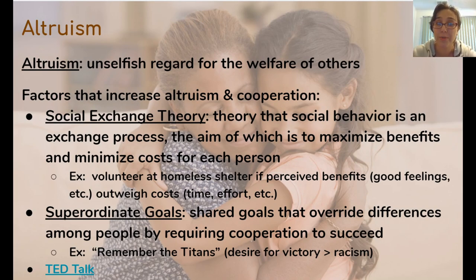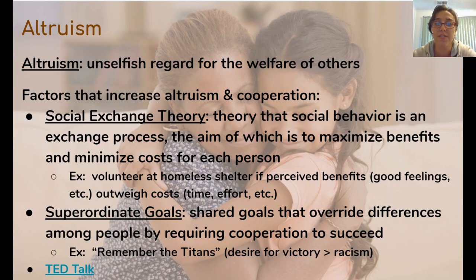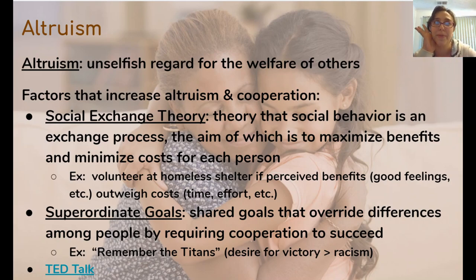The last concept we're going to talk about today is altruism — unselfish regard for the welfare of others. This means doing things to help other people with no expectation of reward or personal benefit. The TED Talk linked at the bottom of this slide was all about altruism. There are factors that increase altruism and cooperation. One theory is social exchange theory: my goal in being altruistic is to maximize benefit and minimize cost for myself and the group.